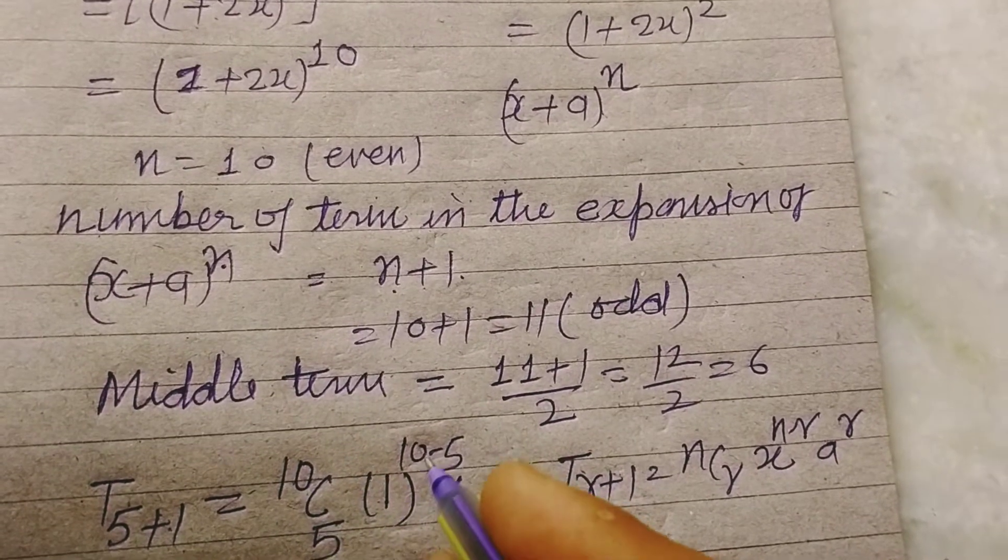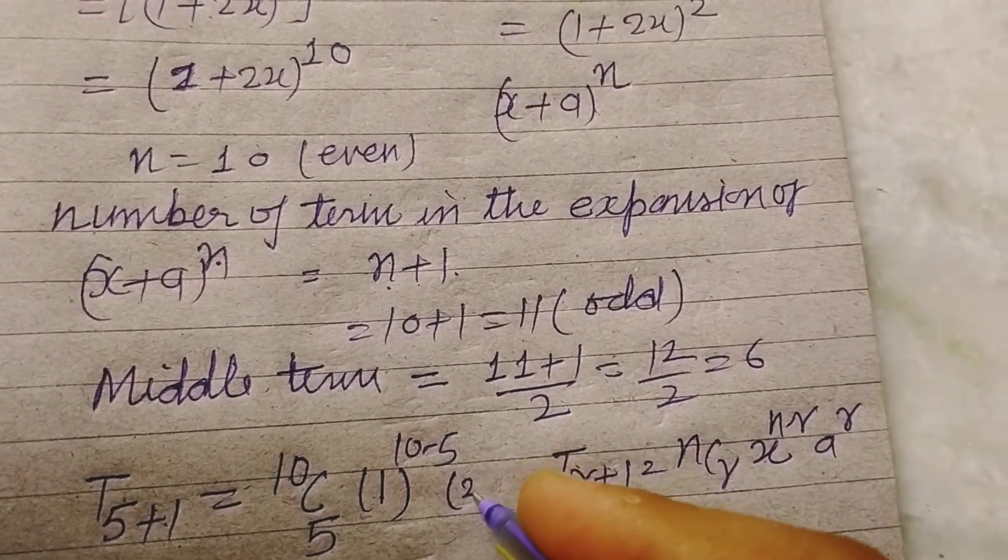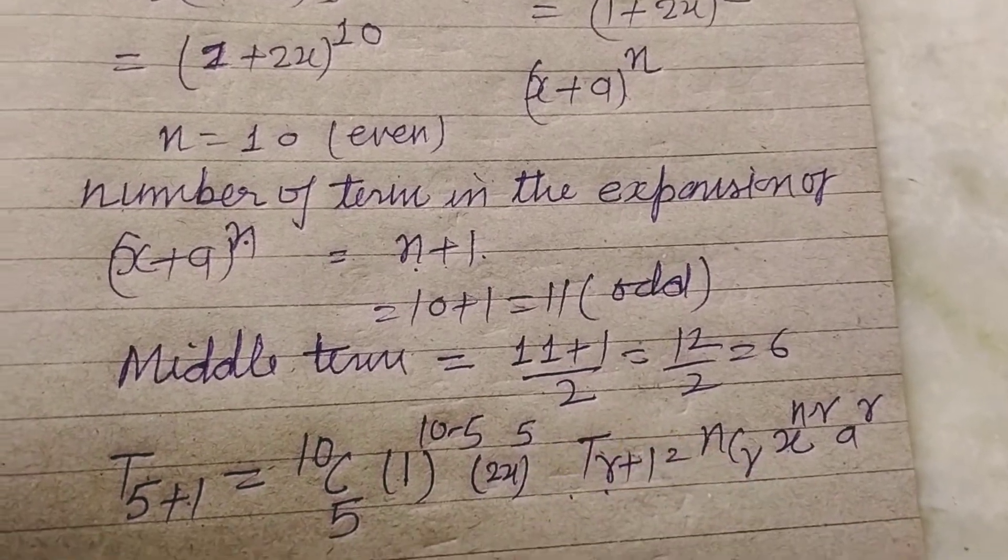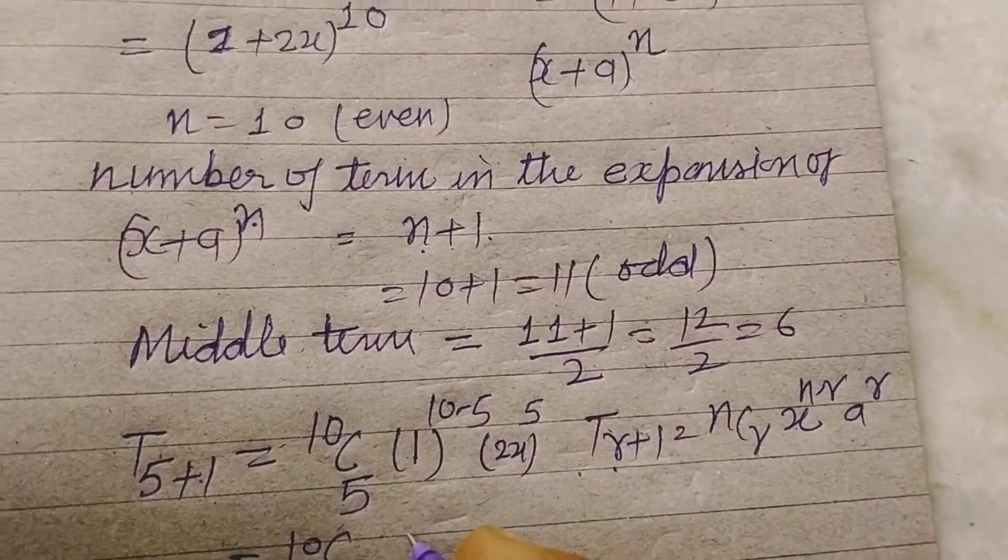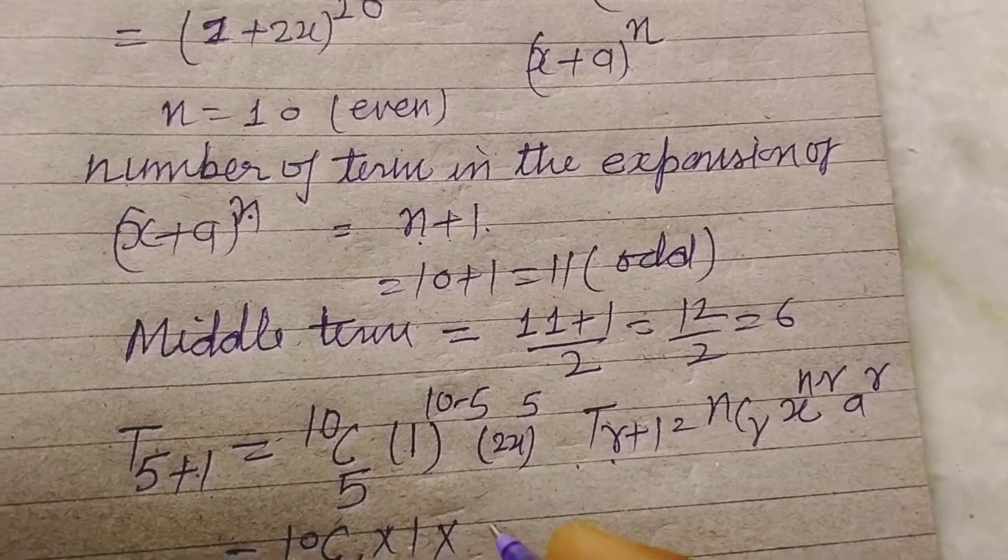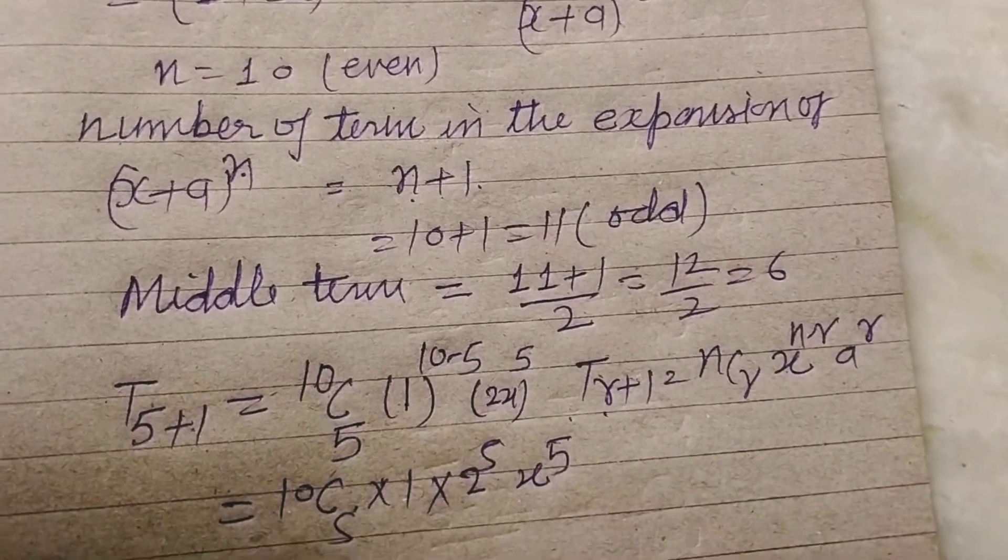And n c r x to the power n minus r a to the power r. a is here 2x to the power r, r is 5. So finally we got 10 c 5. This is 1. And this is 2 to the power 5 and x to the power 5.